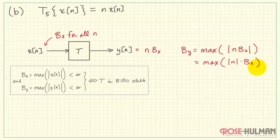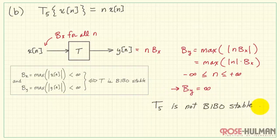I can bring BX out of that part. And we're looking at the maximum absolute value of N times that bound BX. Now N is our time index. It can be any value from minus infinity to plus infinity. Therefore, BY is not finite and our system is not stable.